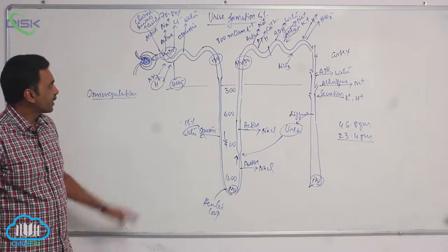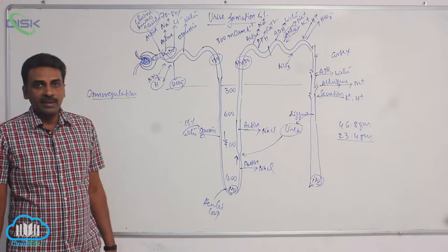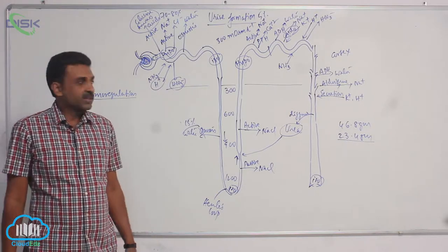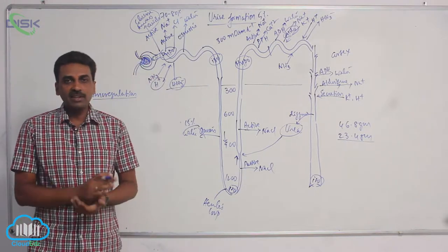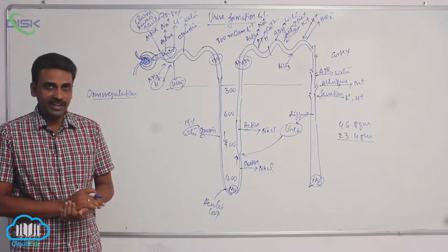Osmoregulation. Now kidneys have got multiple functions. The multiple functions include excretion of waste like urea, uric acid, creatinine. These are collected and pushed outside by kidneys.